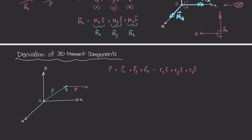Our position vector has three components: an rx component, an ry component, and an rz component. In unit vector notation, r = rx·i + ry·j + rz·k. Here rx, ry, and rz are scalar quantities representing distances along x, y, and z respectively. So we can write r simply as x·i + y·j + z·k.